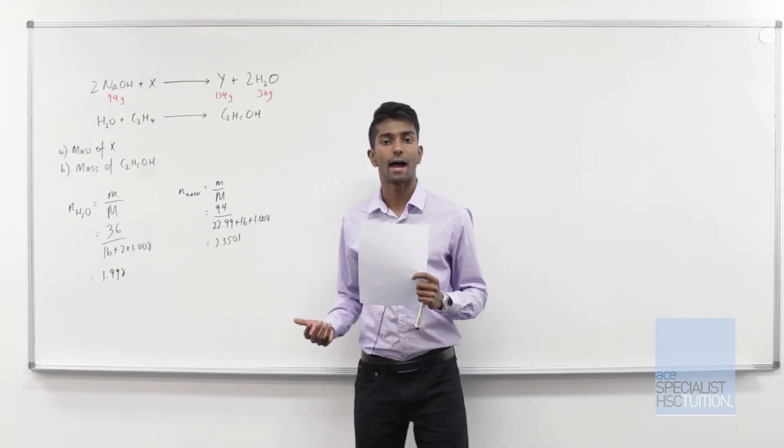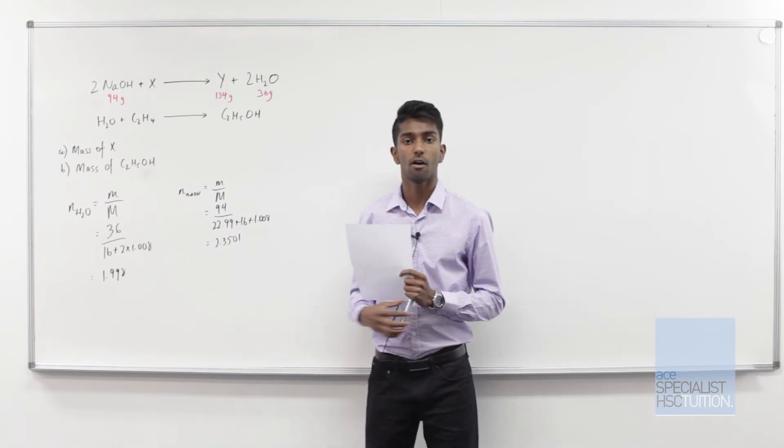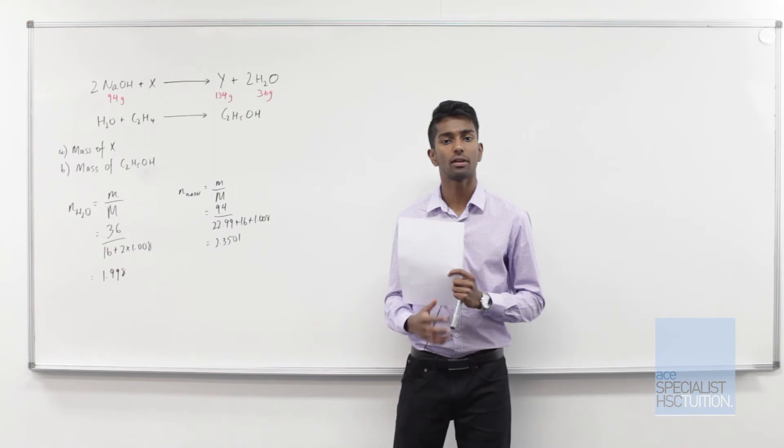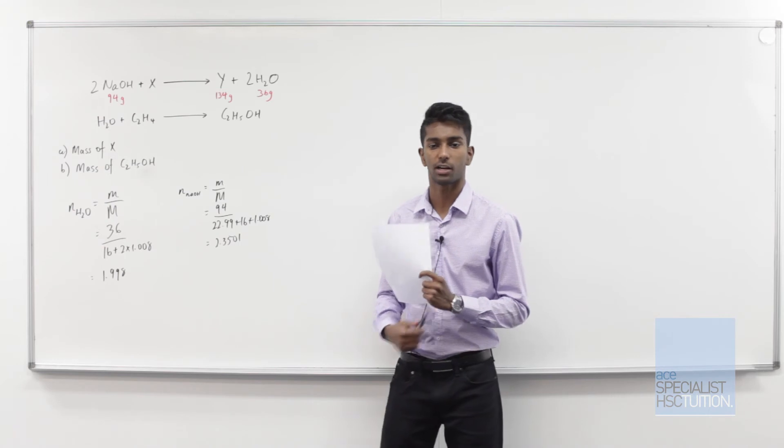So to do that, we know that 1.998 moles of NaOH has reacted. So then we simply use a molar calculation to figure out the amount of mass that has reacted in this reaction.